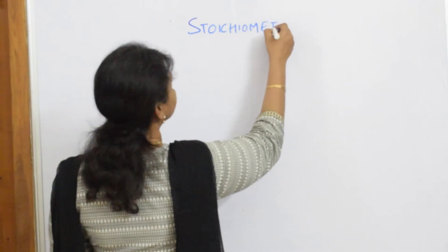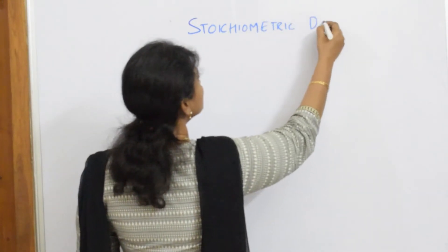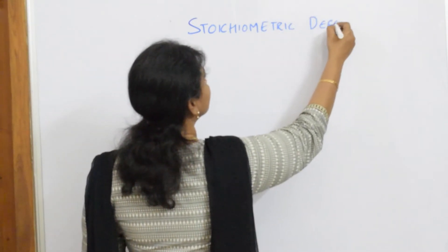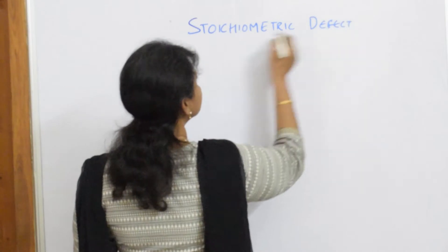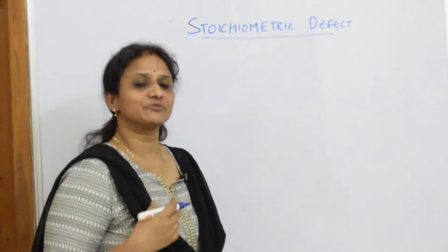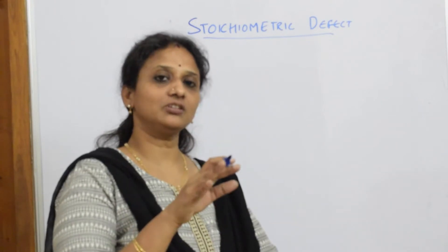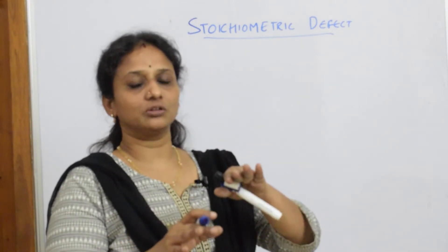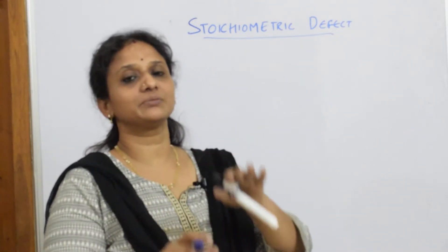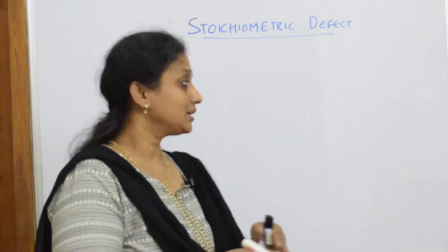Stoichiometric defect. What is the meaning of this word? Stoichiometry means equal. Both the cation and the anion are missing from the lattice site. Stoichiometry means equal ratio.